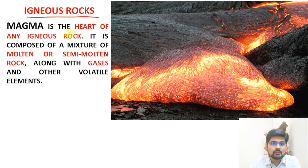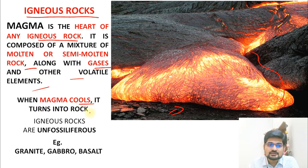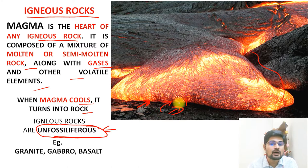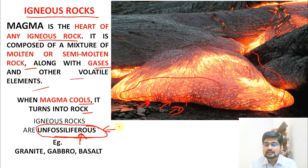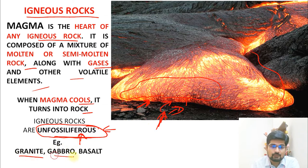Magma is the heart of igneous rock — a mixture of molten or semi-molten rock along with gases and other volatile elements. When this magma cools it turns into rock. Igneous rocks are non-fossiliferous because high temperatures assimilate any detrital material, and they originate from the lower levels of the earth's crust in the upper mantle asthenosphere where no flora or fauna exist. Examples include granite, gabbro, and basalt.